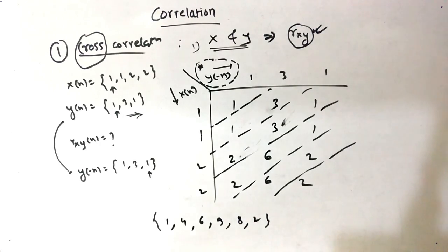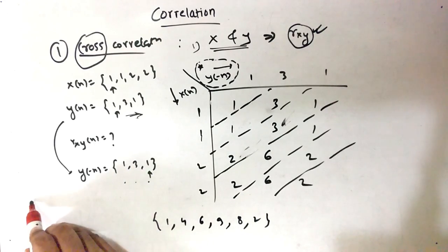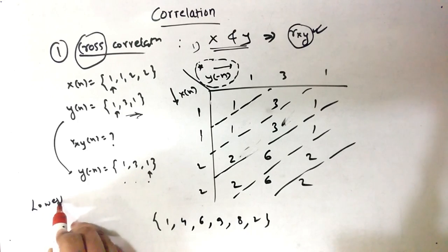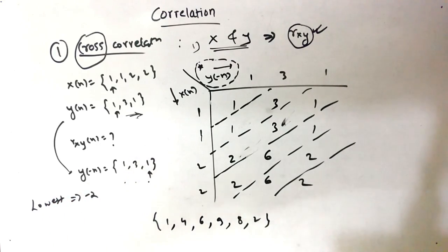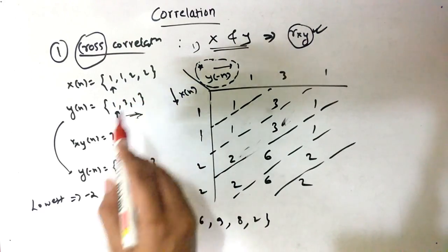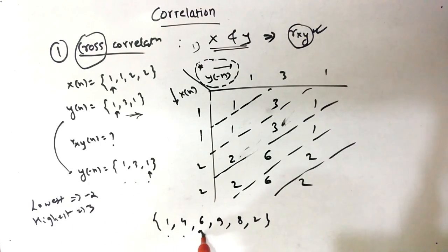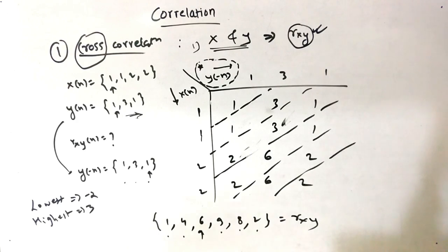Now this is very interesting — where will the axis be? We had 0, then minus 1 and minus 2, so our lowest is minus 2. For the highest: from X(n) we have indices 1, 2, and 3, so the highest is 3. So we start from minus 2, minus 1, 0, 1, 2, 3 — and our answer R_XY is this sequence. This is the cross correlation.